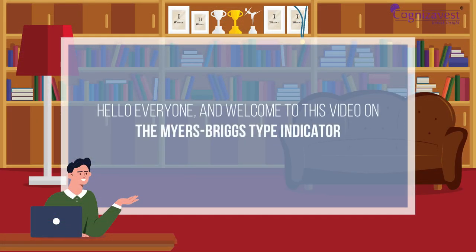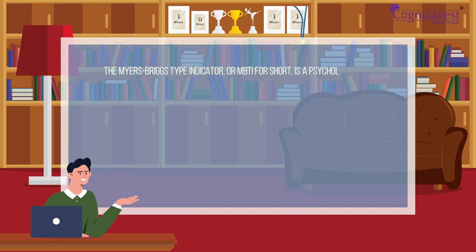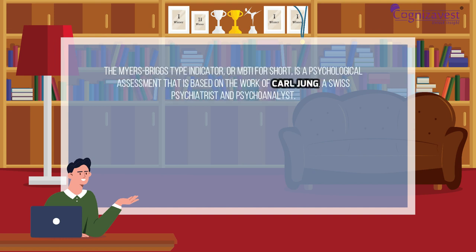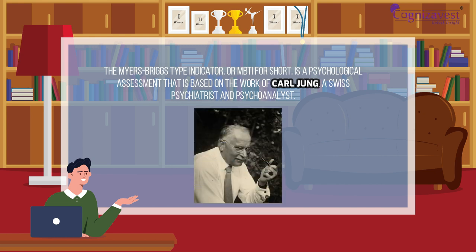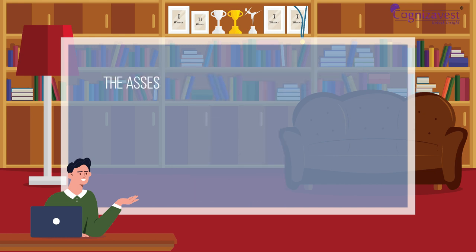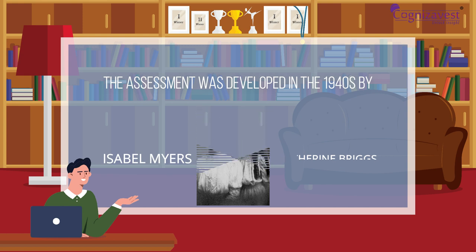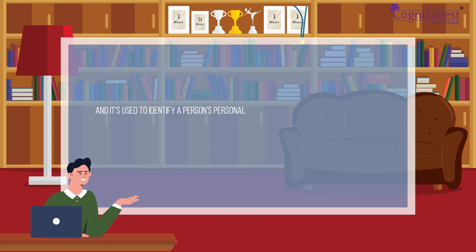Hello everyone and welcome to this video on the Myers-Briggs Type Indicator. Myers-Briggs Type Indicator, or MBTI for short, is a psychological assessment that is based on the work of Carl Jung, a Swiss psychiatrist and psychoanalyst. The assessment was developed in the 1940s by Isabel Myers and Catherine Briggs, and it's used to identify a person's personality type based on their preferences for certain aspects of their behavior and cognition.